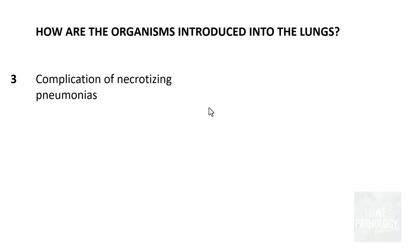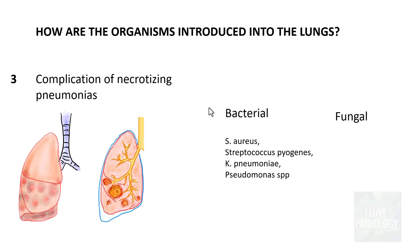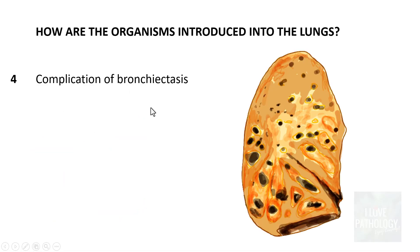The third cause is complication of necrotizing pneumonias. As discussed when we covered pneumonias, one complication is lung abscess. It can be bacterial or fungal pneumonia. The most common organisms with propensity to cause lung abscess are Staphylococcus aureus, Streptococcus pyogenes, Klebsiella pneumoniae, and Pseudomonas species. So it can be a complication of any form of necrotizing or severe pneumonias.